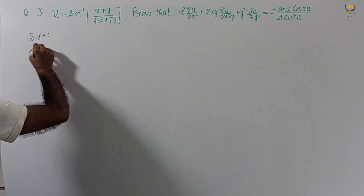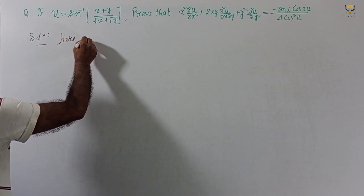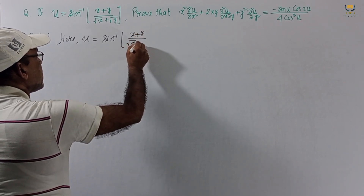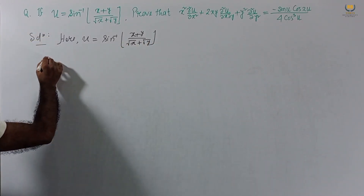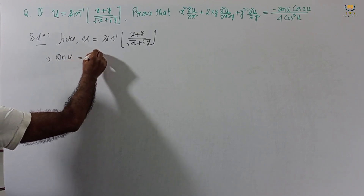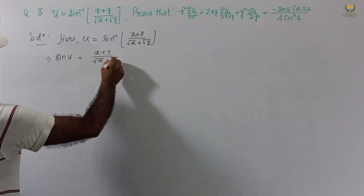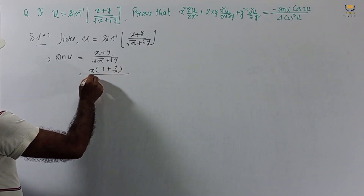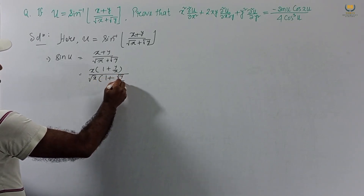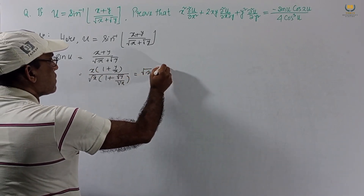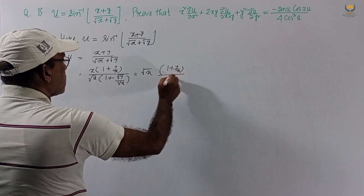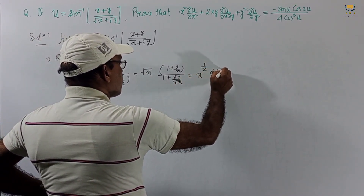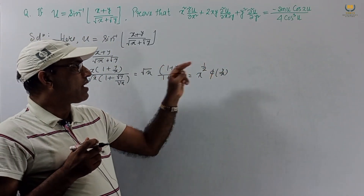Given u = sin⁻¹((x + y)/(√x + √y)), this implies sin u = (x + y)/(√x + √y). Taking x common in the numerator gives 1 + y/x, and taking √x common in the denominator gives √x·(1 + √y/√x). This simplifies to x^(1/2) · φ(y/x), so sin u is a homogeneous function of degree 1/2.